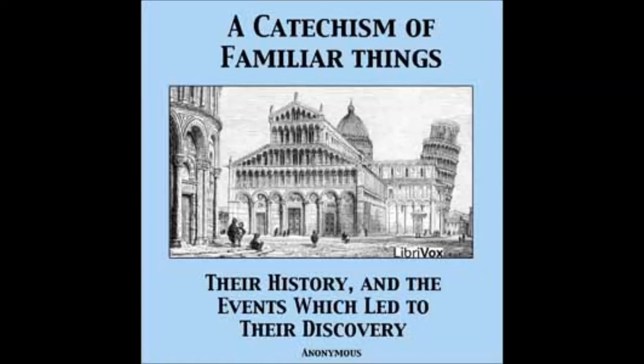What is an obelisk? A very high and slender four-sided pyramid, raised as an ornament in some public place, and frequently covered with inscriptions and hieroglyphics. This kind of monument appears to be very ancient. They were first made use of to declare to posterity the principal precepts of philosophy, to mark the hours of the day by the shadows which they cast on the ground, and in after times to immortalize the actions of heroes and perpetuate the memory of persons beloved.